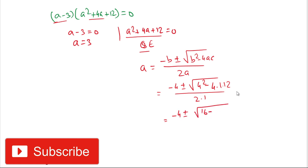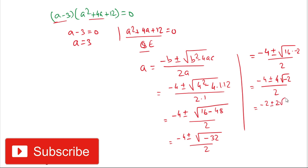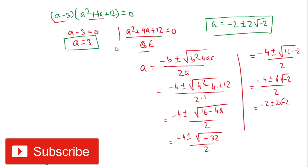Continuing: a = (-4 ± √(-32)) / 2. We can write -32 as 16 × (-2), so √(-32) = 4√(-2). Dividing by 2: a = -2 ± 2√(-2). These two solutions are imaginary. So we have one real solution a = 3 and two imaginary solutions a = -2 ± 2√(-2).